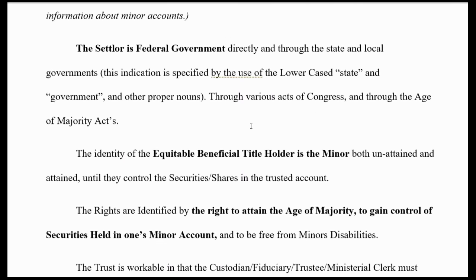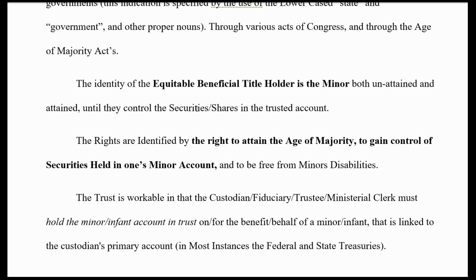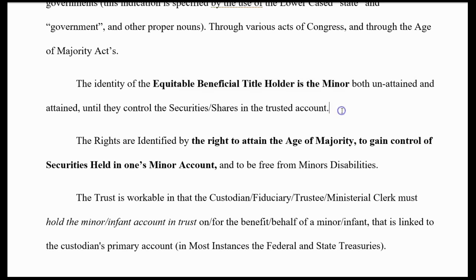Now you've identified who you are. The settlor is the federal government, directly and through state and local governments, through the various acts of Congress and the Age of Majorities Act. The identity of the equitable beneficial title holder is a minor — both unattained and attained. They want to call you a minor? Fine. You're still making your claim. You are at least 18, but you want to be treated as a person of majority who can tell them what to do. Even the minor of age 18 can tell the trustee what to do — they can't erase that you are an equitable beneficial title holder because you hold the birth certificate.